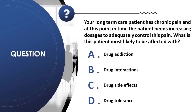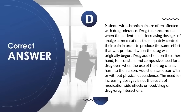Question 12: Your long-term care patient with chronic pain needs increasing dosages to control pain. What is this patient most likely affected with? A) drug addiction, B) drug interactions, C) drug side effects, D) drug tolerance. Correct answer is D. Drug tolerance occurs when a patient needs increasing dosages to produce the same effect as when the drug was originally begun. Drug addiction is a compulsive need for a drug even when it causes harm. The need for increasing dosages is not the result of side effects or drug interactions.